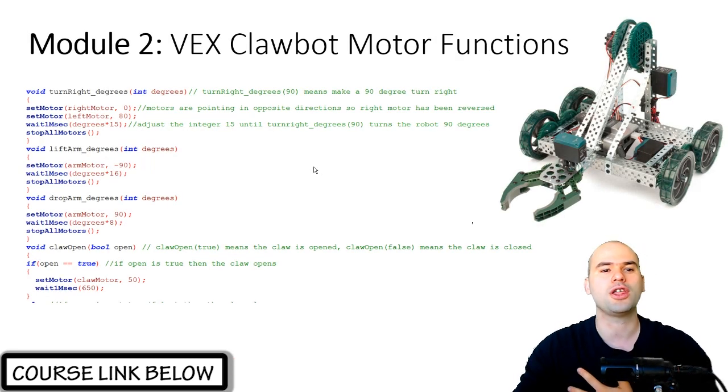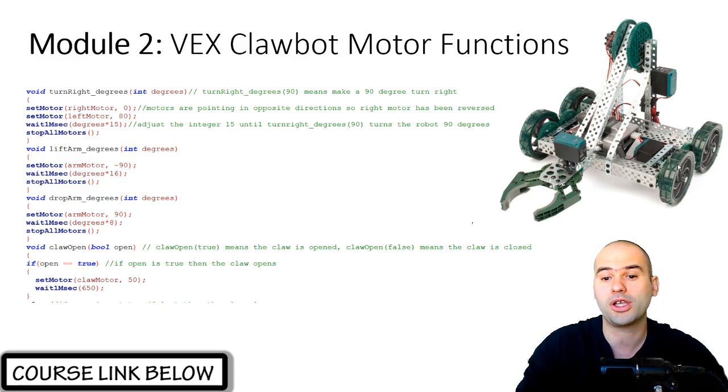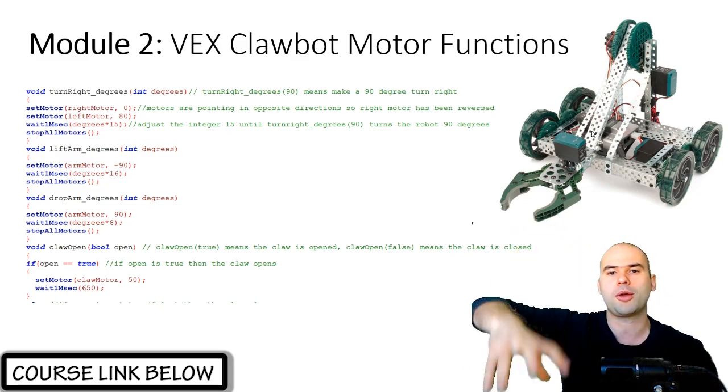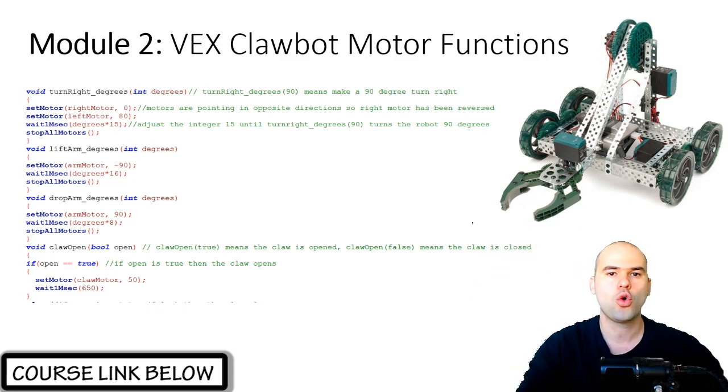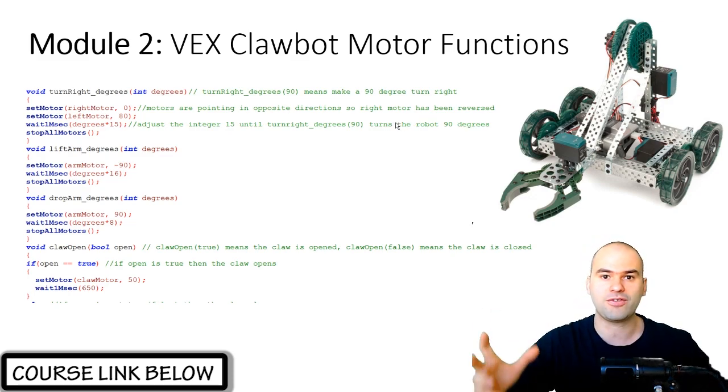In the second module things get interesting. You assemble this VEX Clawbot here, which is a robot that has basically four-wheel drive motors and a claw and an arm that lifts up and down. We are going to write our own functions, basically getting a good grounding in C programming, and then use those functions to do interesting things like lift up and throw objects and navigate around the room.